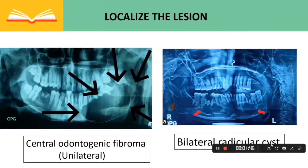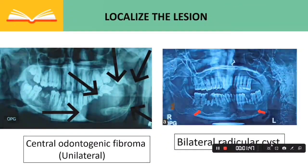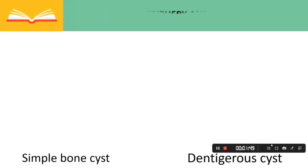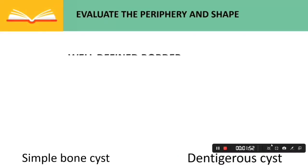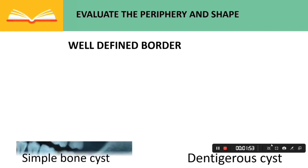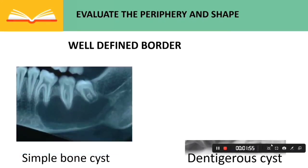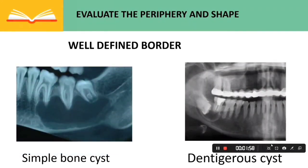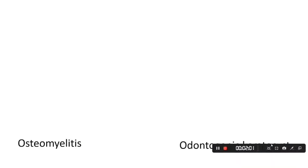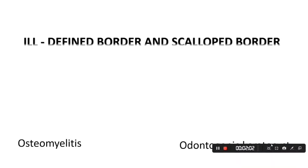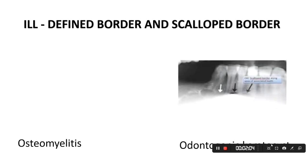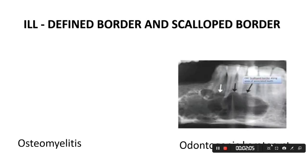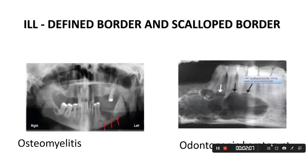In evaluating the periphery and shape of the lesion, it can have well-defined borders, such as in simple bone cysts and dentigerous cysts; ill-defined borders, such as in osteomyelitis; or scalloped borders, such as in odontogenic keratocysts.